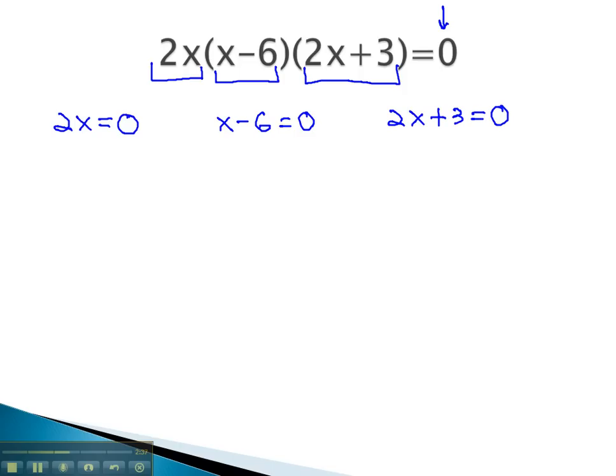Solving these equations will tell us the possible values for x. The first equation solves by dividing by 2, giving us x equals 0. When x equals 0, the first factor is 0, times something, times something, will always equal 0.